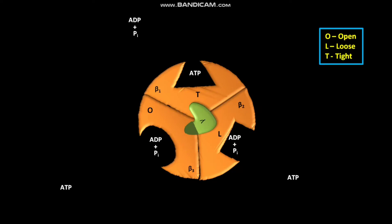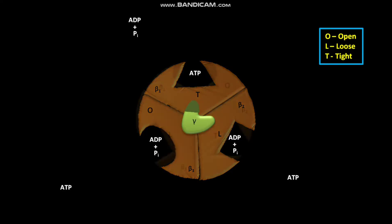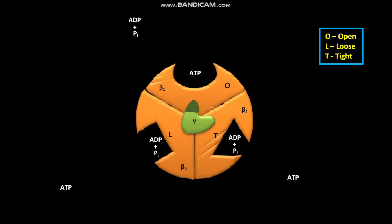Now the H+ ion, or proton flux, through the F0 portion of the ATP synthase causes another 120 degree rotation of the gamma subunit. This 120 degree rotation of the gamma subunit pushes differently against the beta1, beta2, and beta3 subunits. As a result of this push, the beta1 subunit undergoes a conformational change from T to O, or tight to open. Due to this conformational change, the binding affinity of beta1 subunit for its previously bound ATP decreases, and the bound ATP is released from the beta1 subunit.